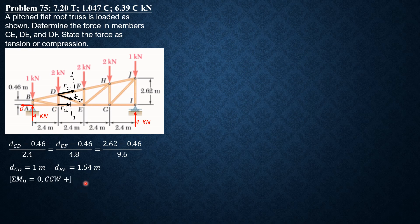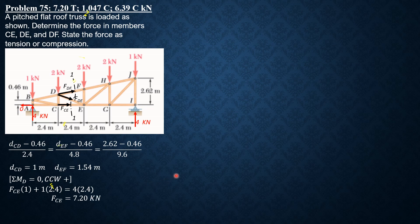Summation of moments about D equals zero, counterclockwise positive. FCE times 1 plus 1 times 2.4 equals 4 times 2.4. Solving gives FCE = 7.2 kilonewtons, and since positive it is tension.